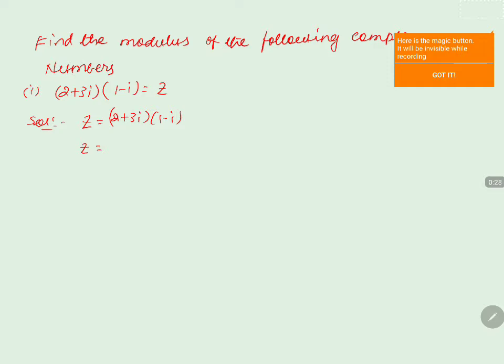Before applying the modulus, let me first multiply these two complex numbers: 2 plus 3i into 1 minus i. The real part of the first complex number is 2, so 2 multiplied by 1 minus i. Then the imaginary part of the first complex number is 3i, so 3i into 1 minus i. Expanding: 2 into 1 is 2, 2 into i is 2i, plus 3i into 1 is 3i, minus 3 into i into i becomes i squared.